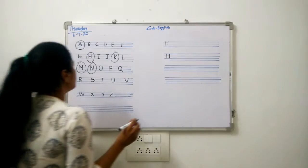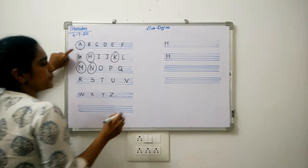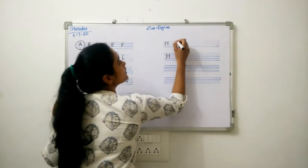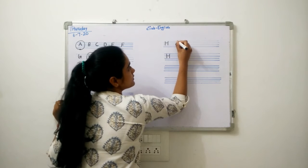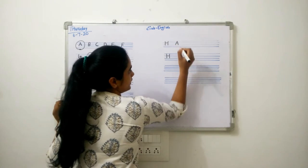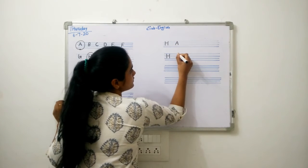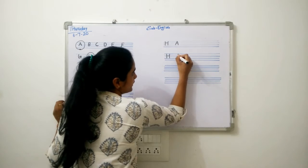Next letter is A: slanting line, slanting line, slipping line. Slanting line, slanting line, slipping line.